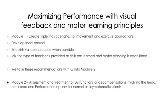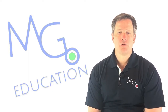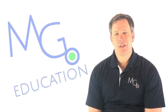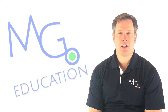The key points from module one were creating triple-play scenarios for movement and exercise applications, developing ideal arousal, establishing variable practice whenever possible, and mixing the type of feedback provided as skills are learned and motor planning is established. We take these recommendations with us into module two, which is focused on the assessment and treatment of dysfunctions and decompensations involving the head-neck area.